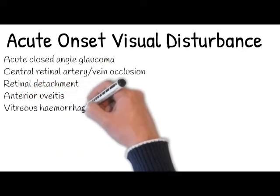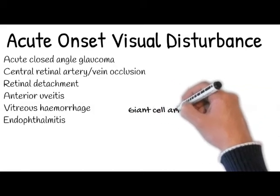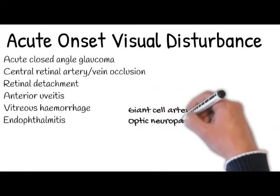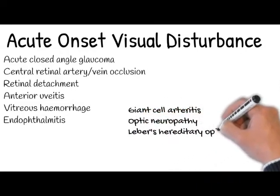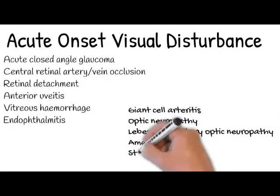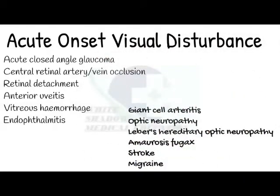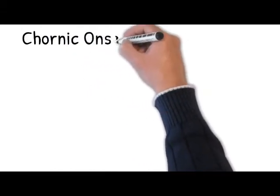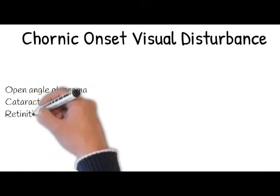For conditions involving nerves, ask about demyelinating optic neuritis, giant cell arteritis, optic neuropathy, Leber's hereditary optic neuropathy, amaurosis fugax, stroke, and migraine. For chronic onset visual disturbance, ask about open-angle glaucoma, cataracts, retinitis pigmentosa, macular degeneration, diabetic or hypertensive retinopathy, optic nerve compression of any cause, and nutritional and toxic optic neuropathies.